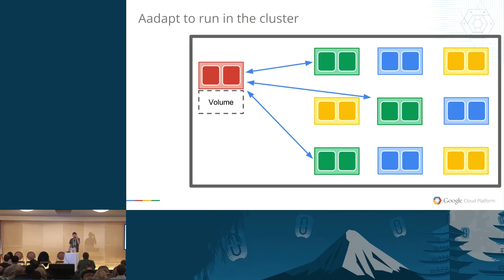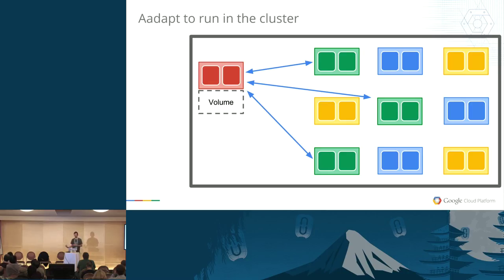Adapting to run in the cluster would be running it in a container inside the cluster, accessing it over a service for service discovery, and that service storing its own physical file system data on a volume or something analogous.